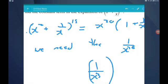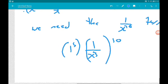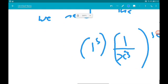So if we've got 1 over x cubed to the power of 10, that means we've got 1 to the power of 5. Now the coefficient that we need is 15 choose 5.